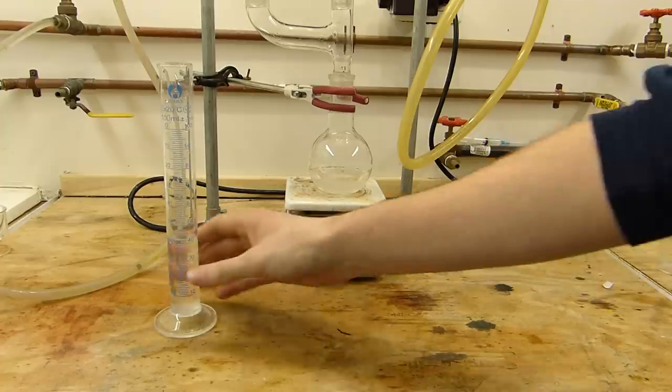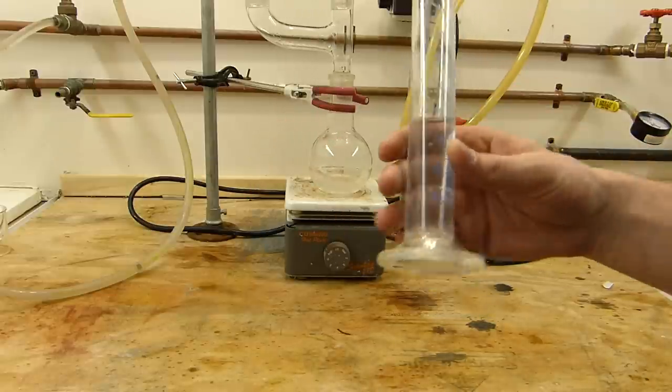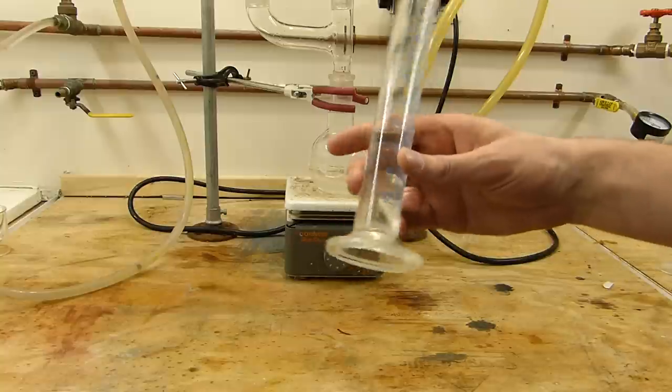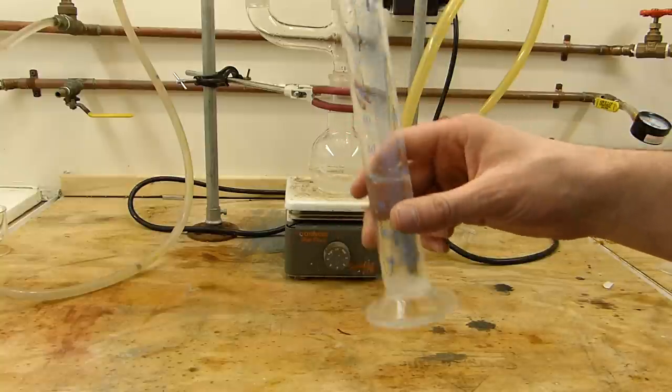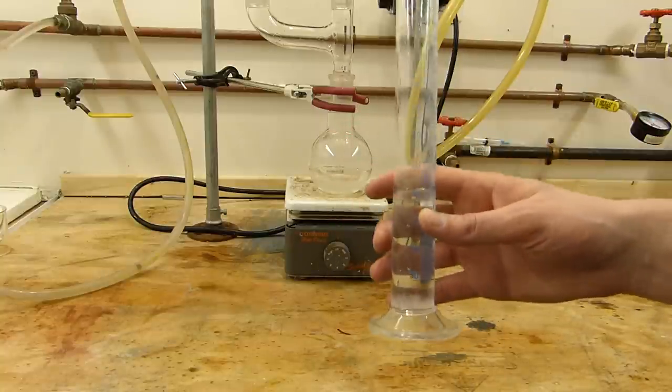So here's our yield. It's approximately just over 40 milliliters of a fairly concentrated solution of ammonia. I could take a specific gravity of this and get a fairly reasonable estimate of the concentration. I could also get it by analysis with, say, titrating a copper salt or something like that.